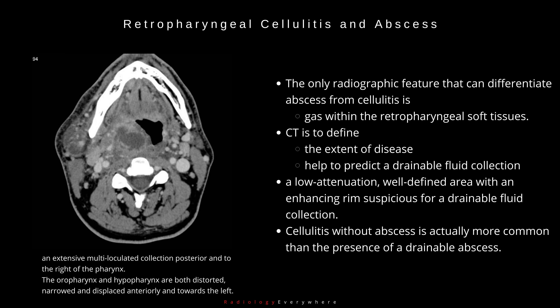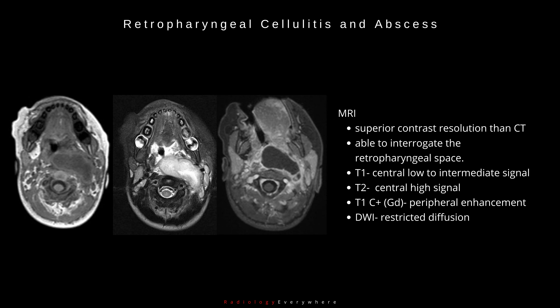The only radiographic feature that can differentiate abscess from cellulitis is the identification of gas within the retropharyngeal soft tissues. CT is used to define the extent of disease and to help predict cases in which a drainable fluid collection is present; it shows a low attenuation, well-defined area with an enhancing rim suspicious for a drainable fluid collection. MRI has superior contrast resolution than CT: T1 images show central low to intermediate signal, T2 images show central high signal, T1 with gadolinium shows peripheral enhancement, and DWI shows increased values indicative of restricted diffusion.